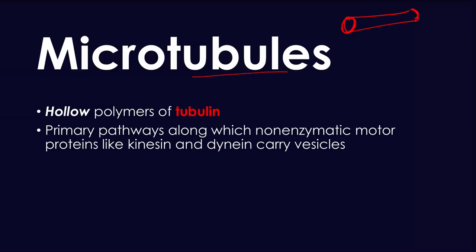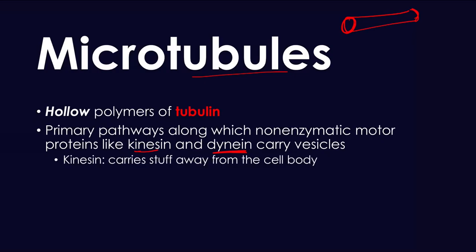Microtubules play a primary role as the pathway along which non-enzymatic motor proteins are able to transport their vesicles and other cargo. These proteins are kinesin and dynein. Kinesin carries stuff away from the cell body, and dynein carries stuff towards the cell body — and this is actually pretty important.